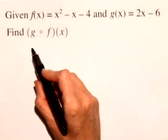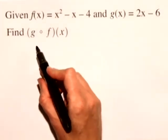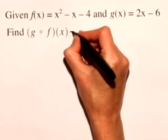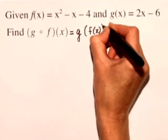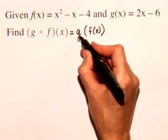In this case, we want to find g of f of x. Let's be careful because the order is really important here. This is really g of f of x, so we're composing f into g.